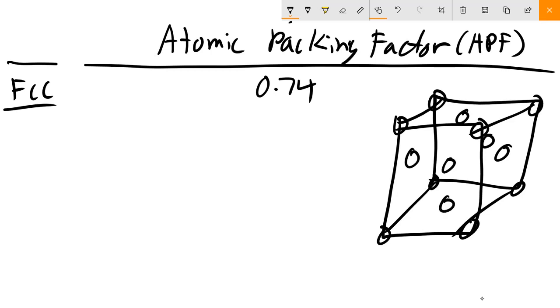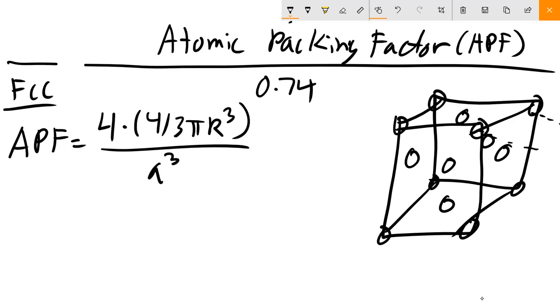Each of these will contribute a half because they're only going to be shared with that next unit cell that crosses over. APF for FCC: we have a total of four atoms, because remember we have six faces, each of those a half, so three plus our edge. So four-thirds pi R cubed.